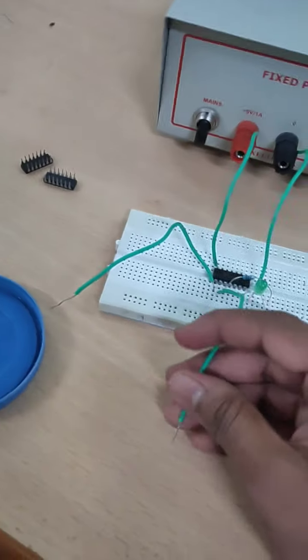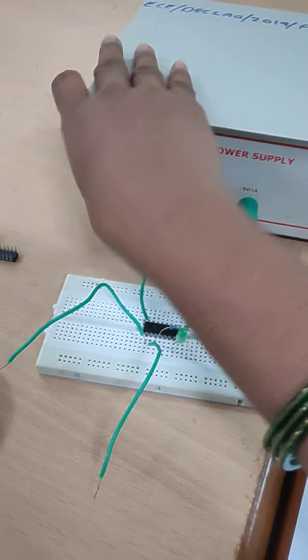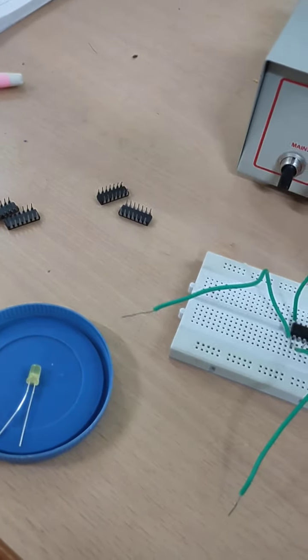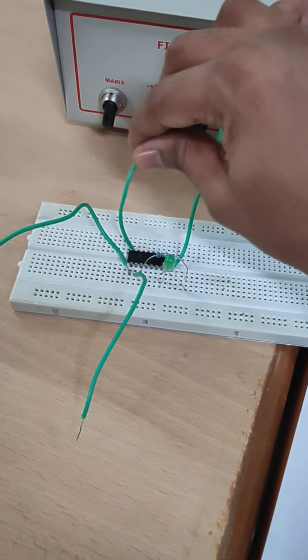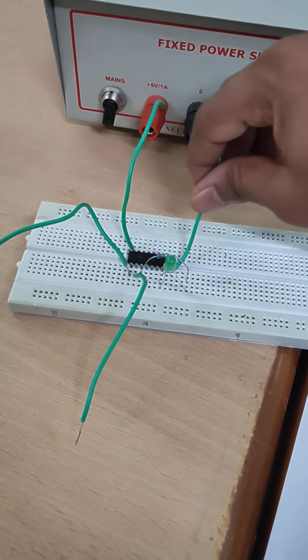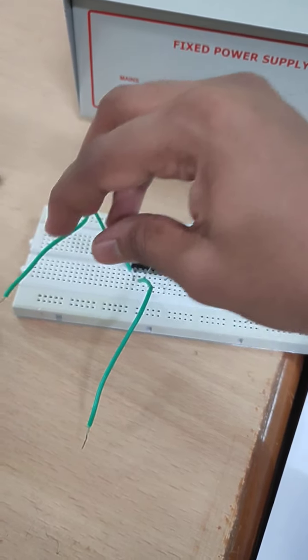How to give inputs? These two are inputs. I am giving inputs. This is 1 and this is 0. Plus 5 is 1 and this is 0. For example, I need to give 0, 0 as inputs.